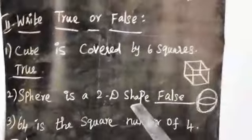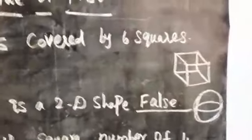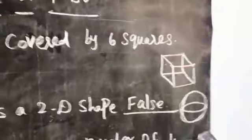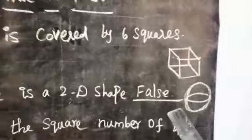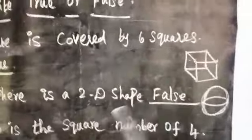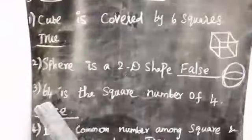Second statement: sphere is a 2D shape. Look at cube, cuboid, sphere, cone, cylinder - these are all called 3D shapes. The sphere belongs to the 3D shapes category. So the statement is false.